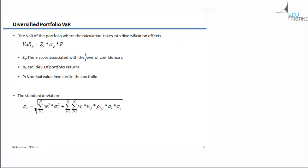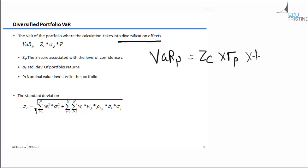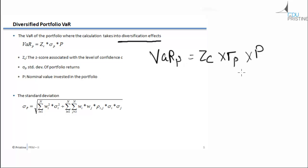The next topic is Diversified Portfolio VaR. Diversified Portfolio VaR takes into consideration all the diversification effects. It is given by: VaR of the portfolio equals ZC into standard deviation of the portfolio into the portfolio value. Here ZC is the Z-score associated with confidence level C, Sigma_P is the standard deviation of portfolio returns, and P is the nominal amount invested in the portfolio.